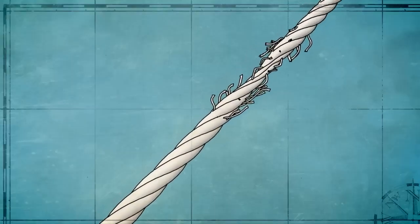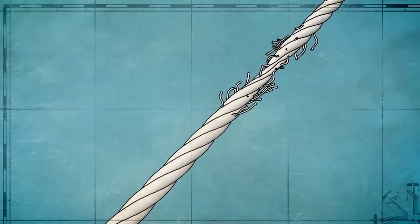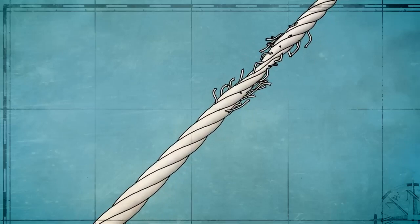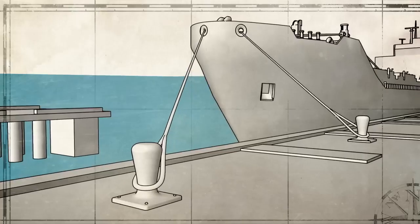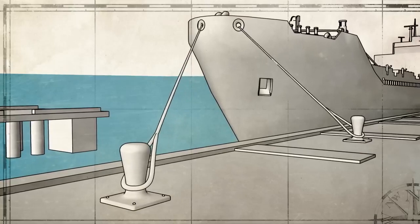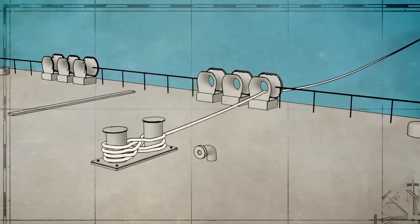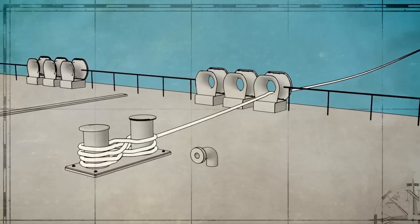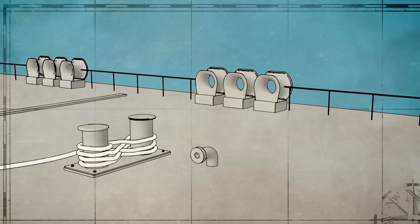Snapback is potentially the most deadly of all line handling hazards. A worn line, the wrong line, or a line under too much tension can part, snapback, and recoil, striking anything in its path with tremendous force.